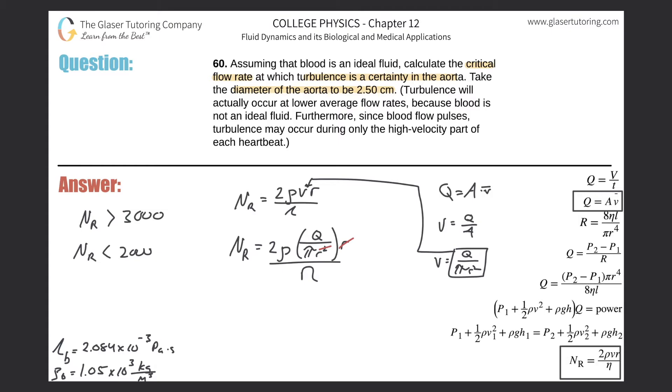What happens to r? Well, one of them cancels. So now I can reorganize this fraction. It'll be 2ρQ divided by πr times the viscosity η.